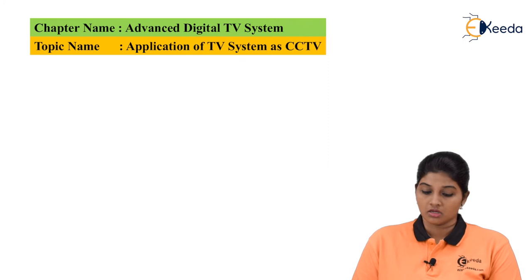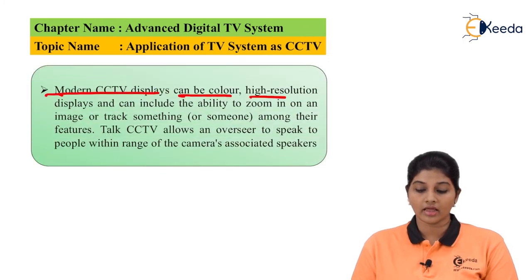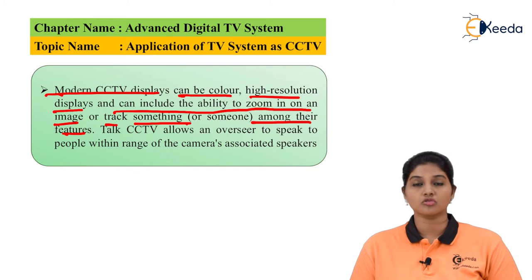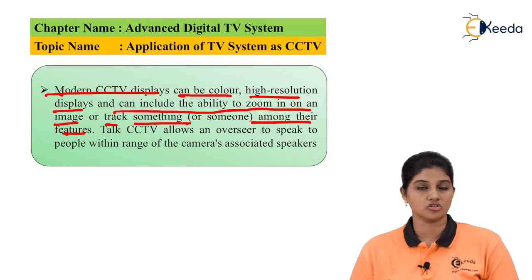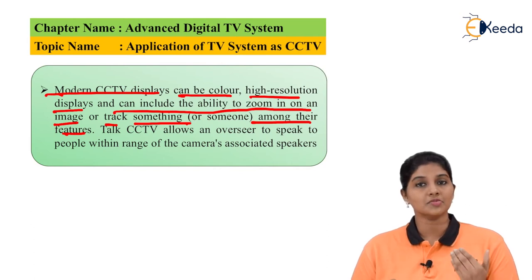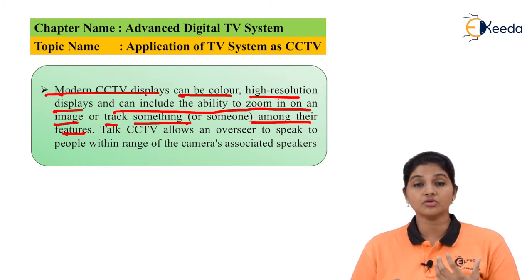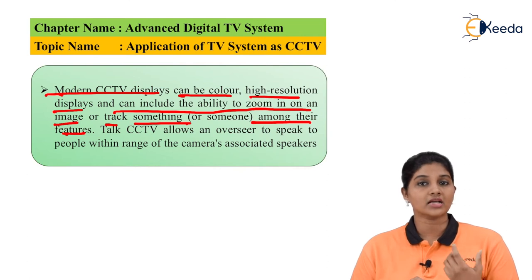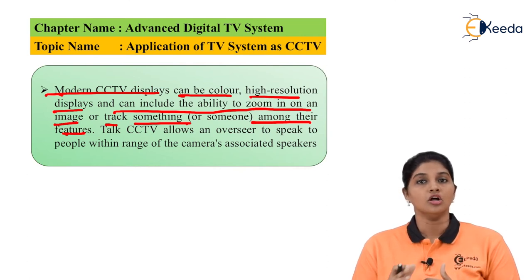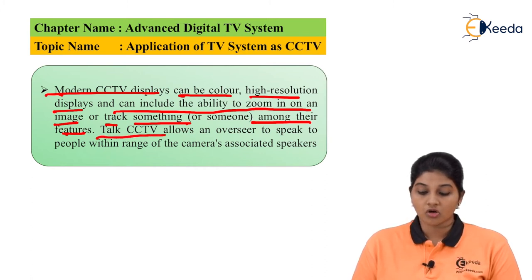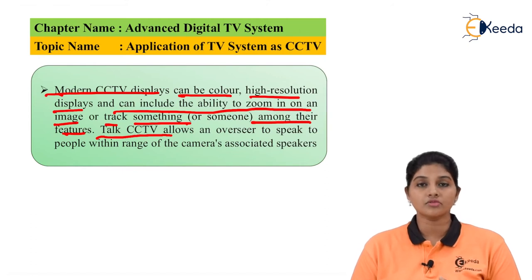Modern CCTV displays are colored and high resolution, and include the ability to zoom in on images and track people or objects among their features. The old displays used black and white monitors with very low resolution, whereas modern displays have high resolution, colorful display, and the ability to track someone or something. All these new features have been added to modern CCTV cameras.